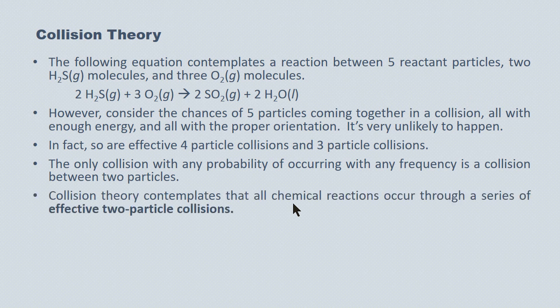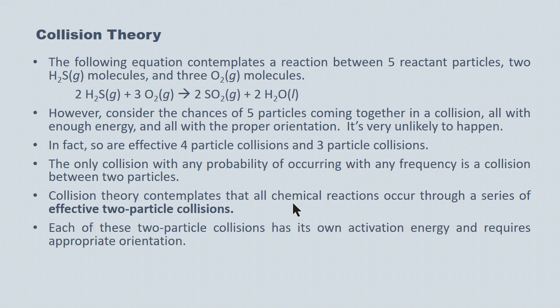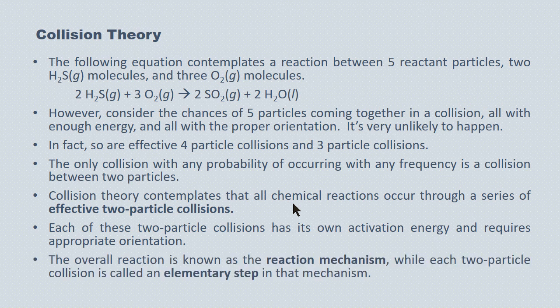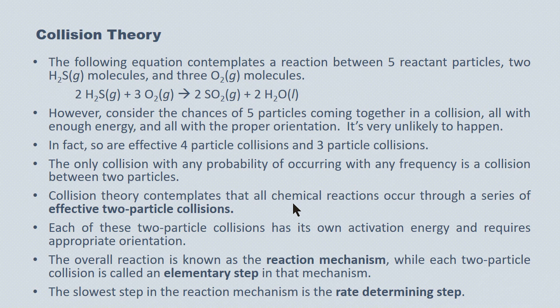Central to collision theory is the notion that all chemical reactions occur through a series of effective two-particle collisions. It takes a number of two-particle collisions for a chemical reaction to occur. Each two-particle collision will have its own activation energy and requires the particles to come together with the proper orientation. We now rename the overall chemical reaction the reaction mechanism, and each two-particle collision is called an elementary step in that mechanism. The slowest step in the mechanism is referred to as the rate-determining step — it's the slowest person down the stairs who decides when everybody eats.